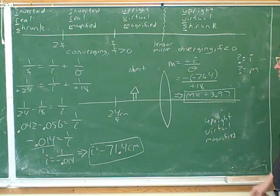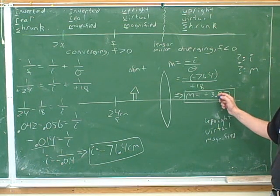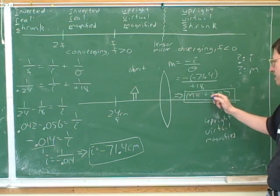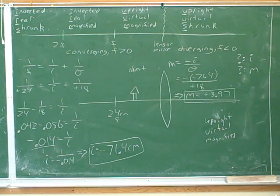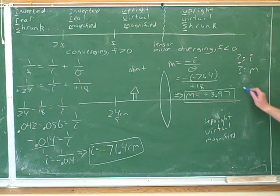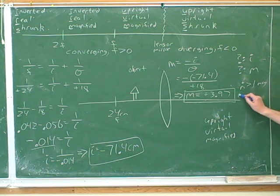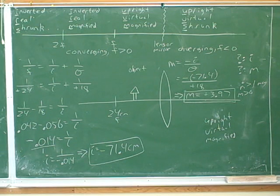Remember that the magnification gives you two different pieces of information. So what are the two pieces of information that we can extract from this positive 3.97? The magnitude is greater than 1, so it's magnified. And then m is greater than 0, so it is upright.